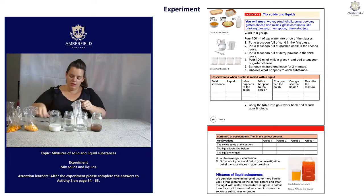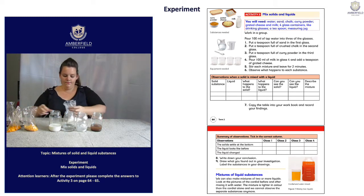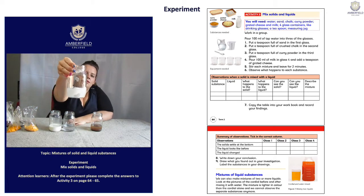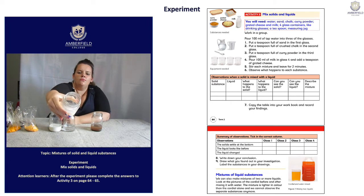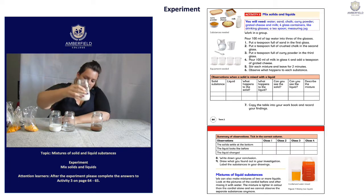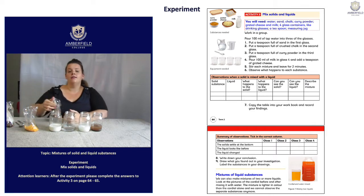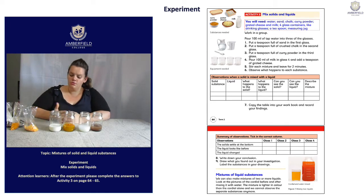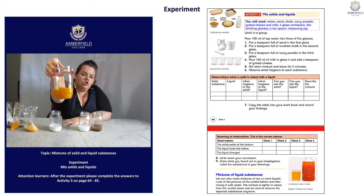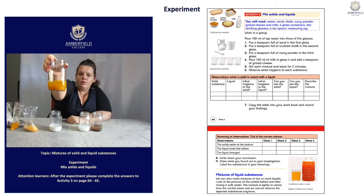In the next jar, I will be putting a teaspoon of chalk. Let's see what happens. Now in jar 2, grade 6s, you can see we have a teaspoon of chalk inside the jar. If you can look clearly, it is floating at the top and some of it is settling. Let's move to the next jar. In the next jar, I will be putting a teaspoon of curry powder. You have seen I haven't stirred the mixture. In this jar, we have a teaspoon of curry powder, and the curry powder is also settling and mixing with the tap water.